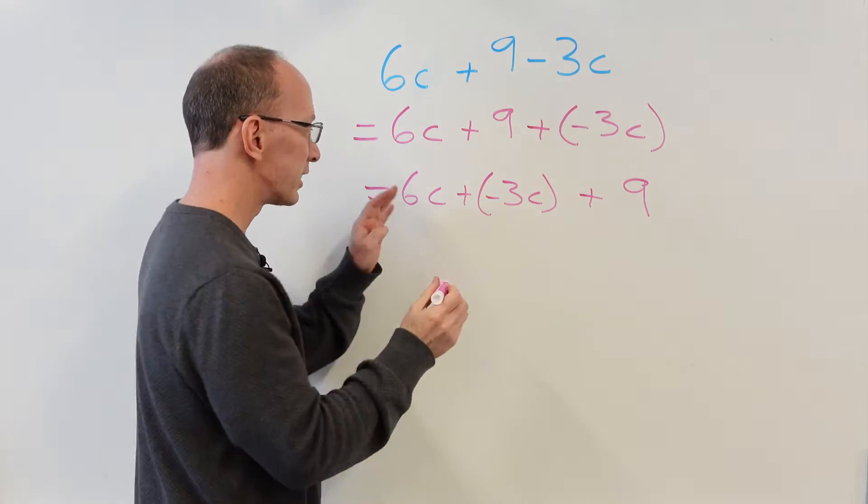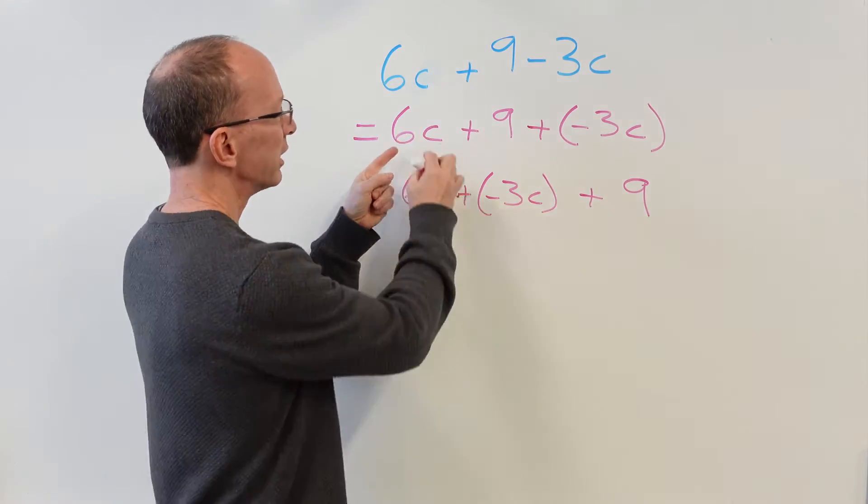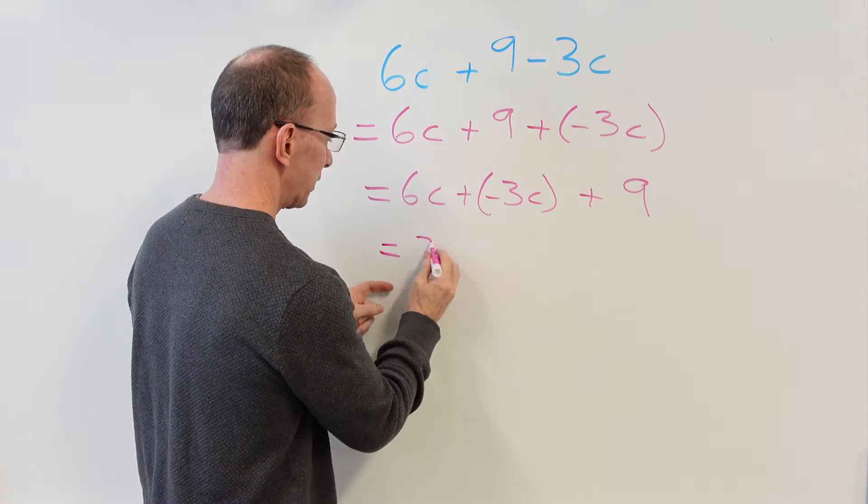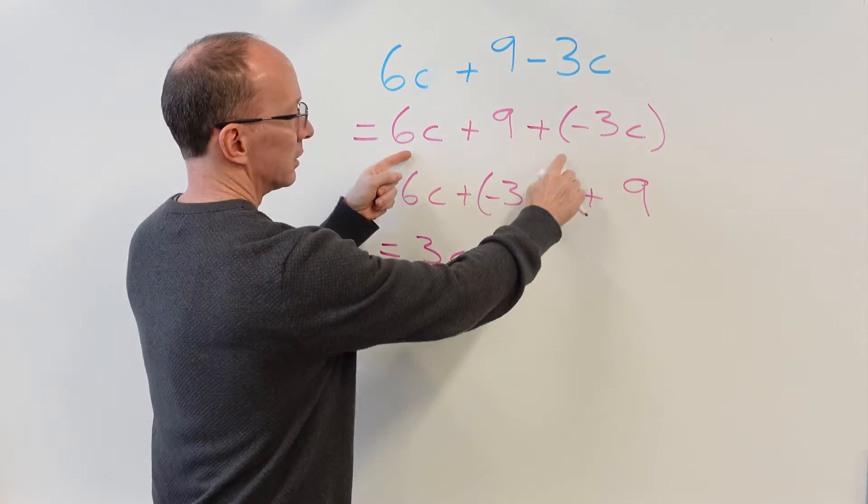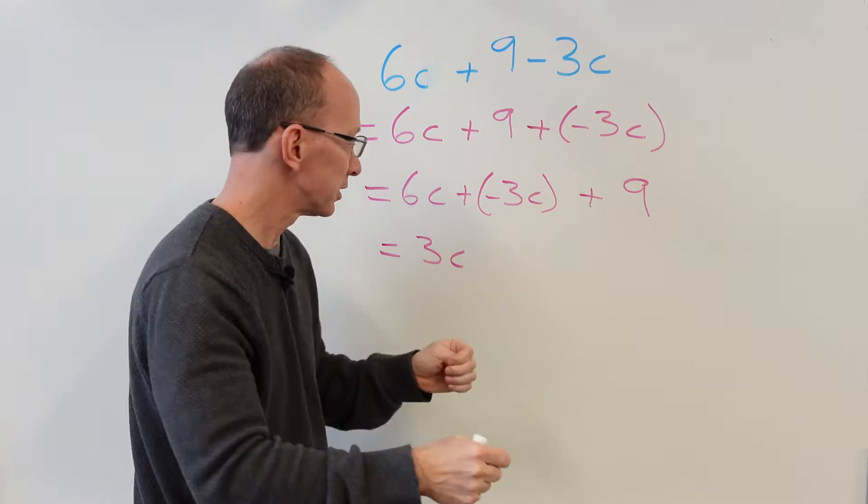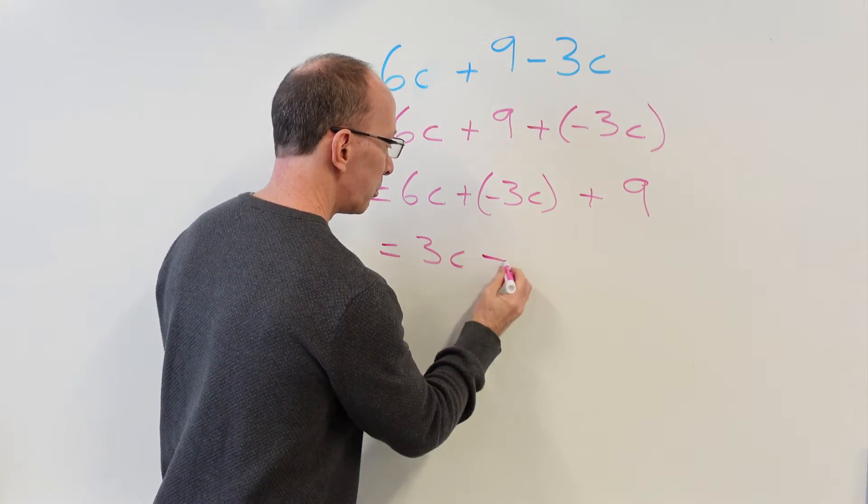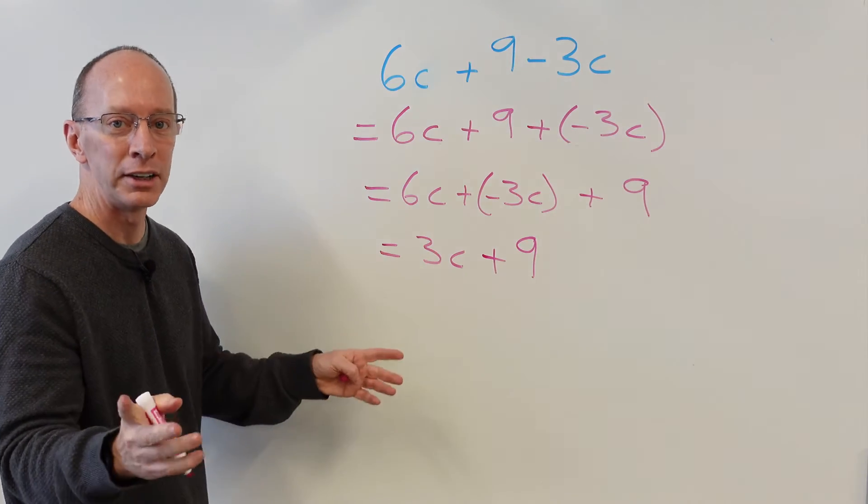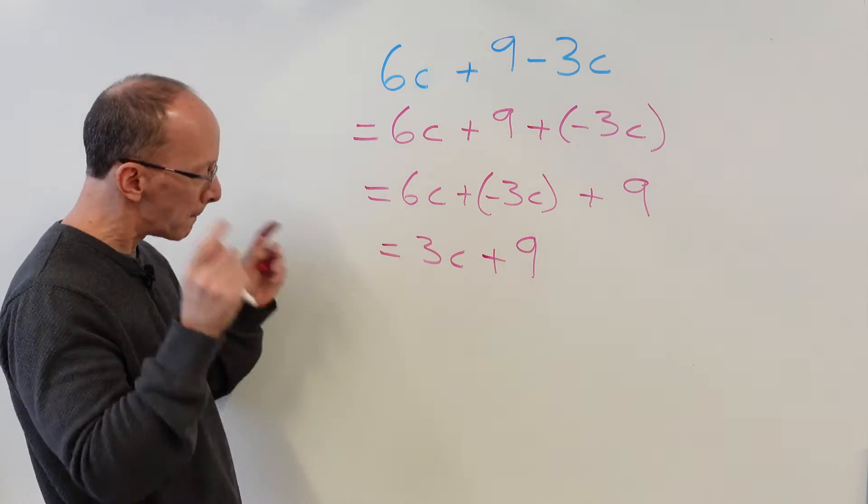I don't want to get this too complicated, but you could have done that step right here. 6c minus 3c is 3c. So if you wanted to kind of skip this part, whatever. It comes up with the same answer. I have 3c plus 9. Boom! There it is. Job done. Ready to do one more? Let's do it!